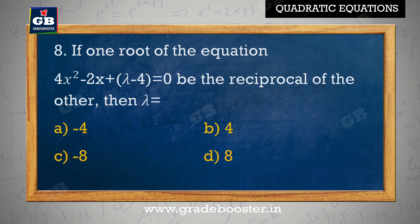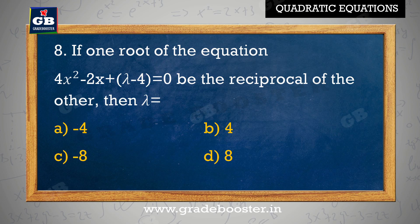If one root of the equation 4x square minus 2x plus lambda minus 4 equal to 0 is the reciprocal of the other, then lambda equal to: A. minus 4, B. 4, C. minus 8, D. 8.